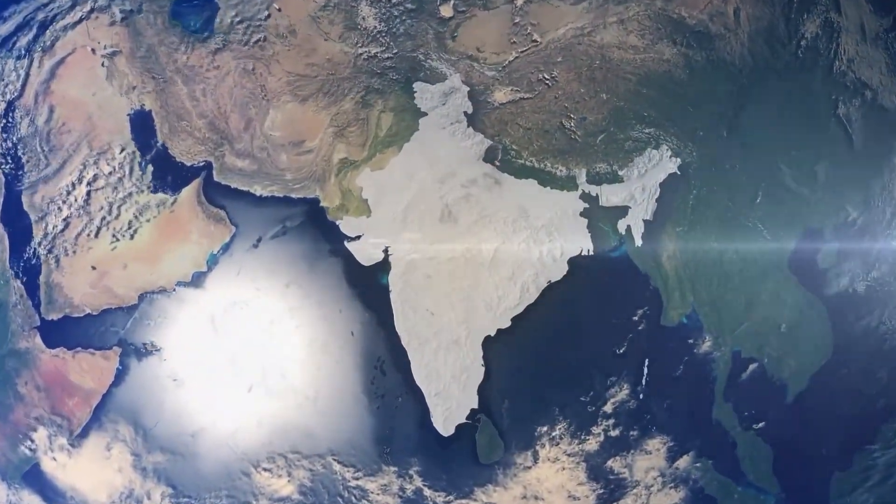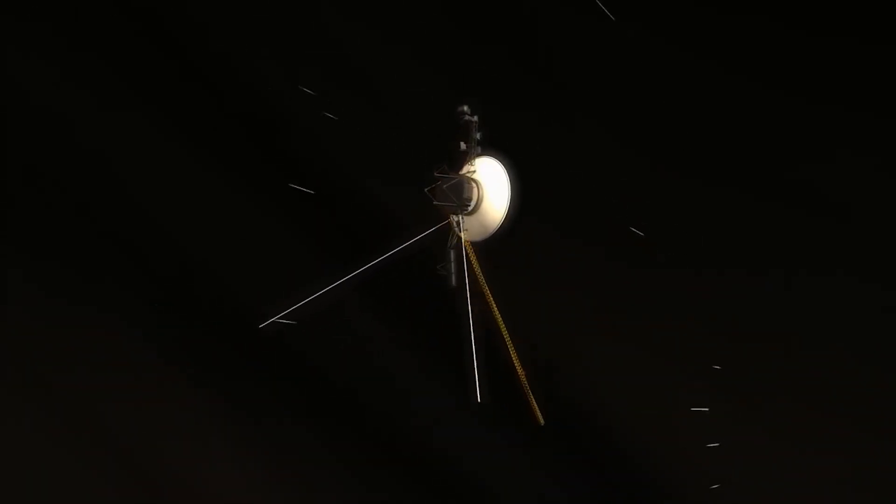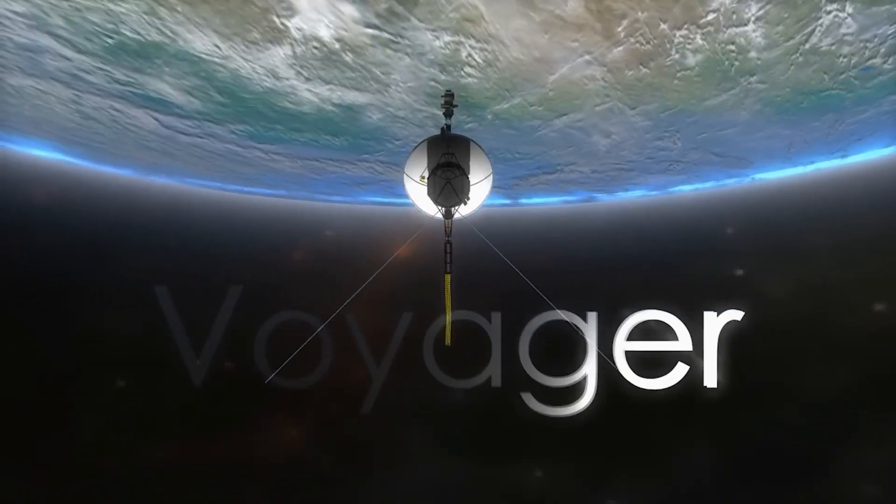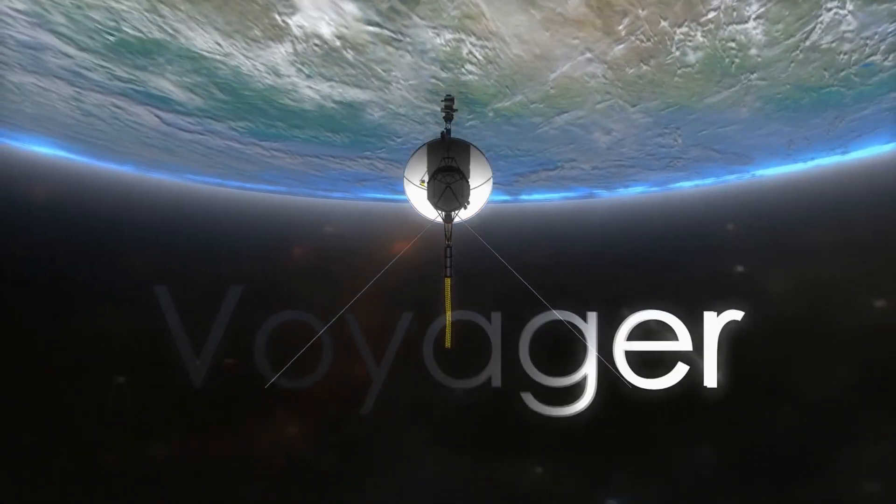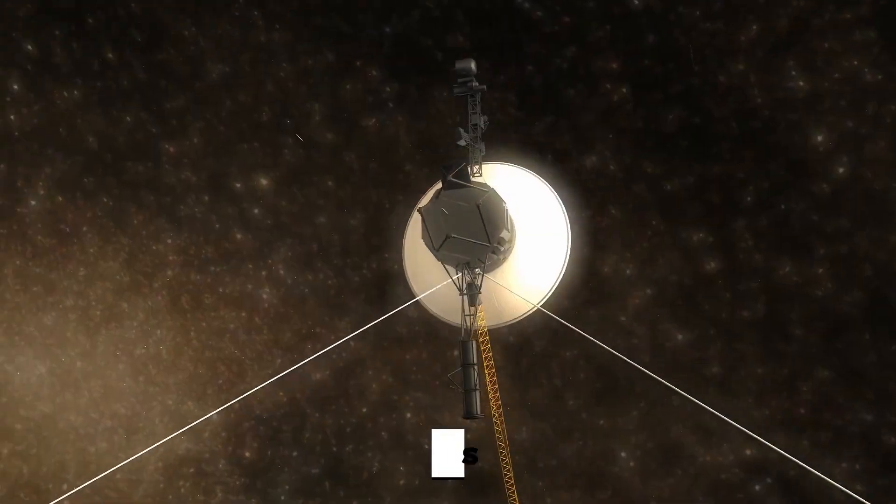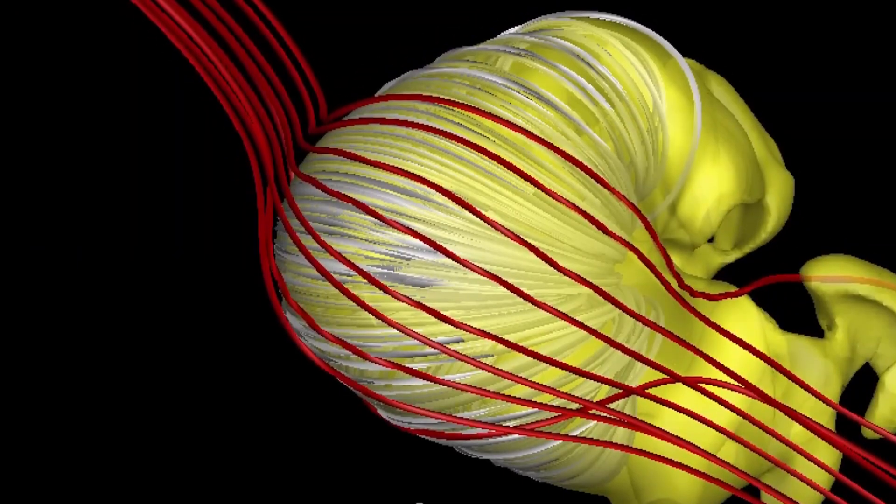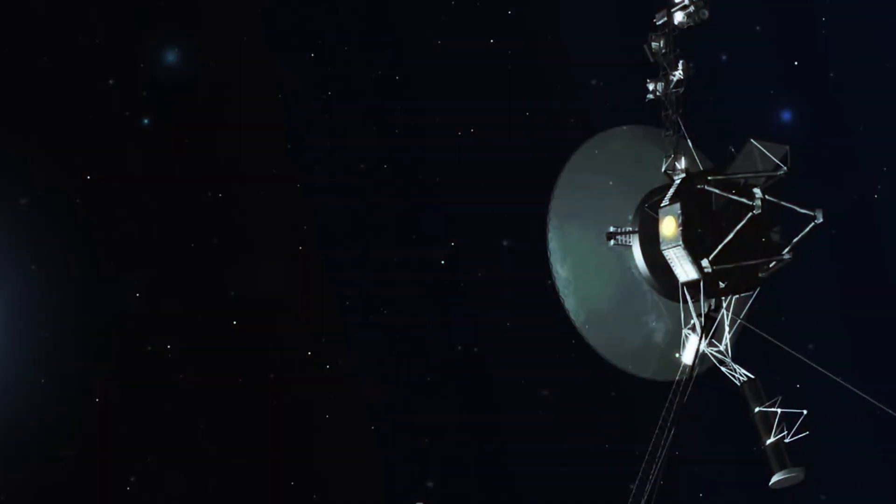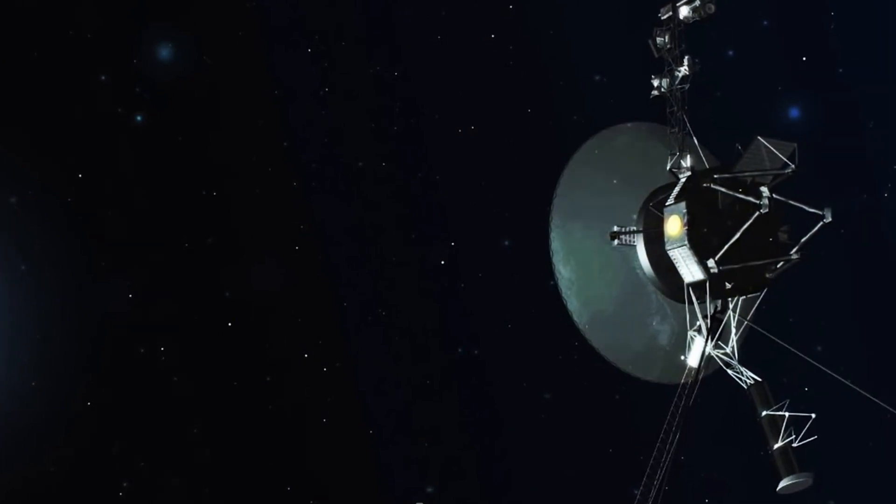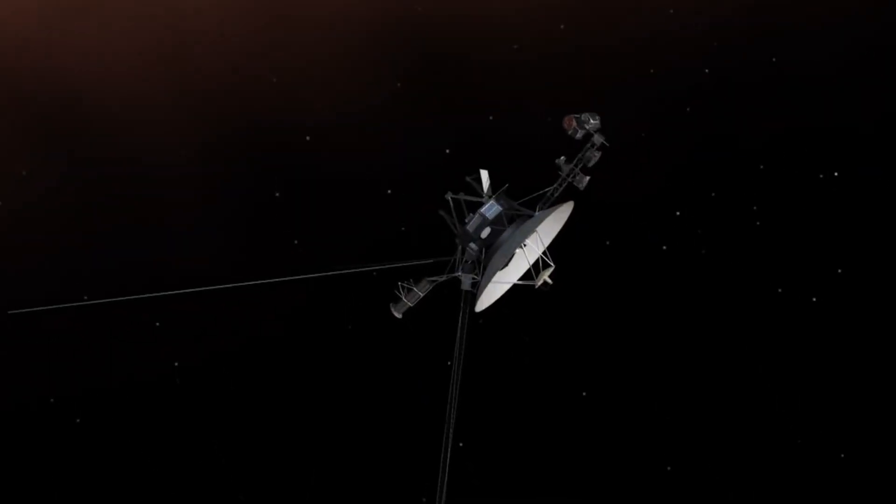However, when Voyager 2 arrived in this area, the Sun was in a phase of high activity, and its solar wind may have stabilized the heliopause. Voyager 2 also provided evidence that an extensive magnetic wall does indeed exist on our side of the heliopause, acting as additional protection against cosmic radiation. In detail, this magnetic field appears to be stronger than any other in the heliosphere, and we are clearly dealing with an extremely dynamic structure.